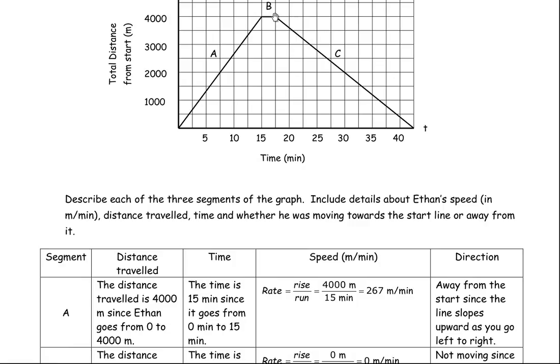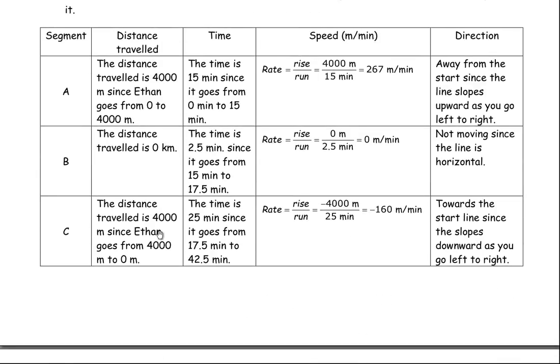For line segment C, he's going from 4,000 down to a distance of 0 again. So he would have traveled 4,000. Now, you could write negative 4,000 here. That's the number we use in the slope or rate calculation, rate of change, because he actually went from 4,000 down to 0. So it is a change of negative 4,000. I put 4,000 here because it's really just how far he went. Now the time...